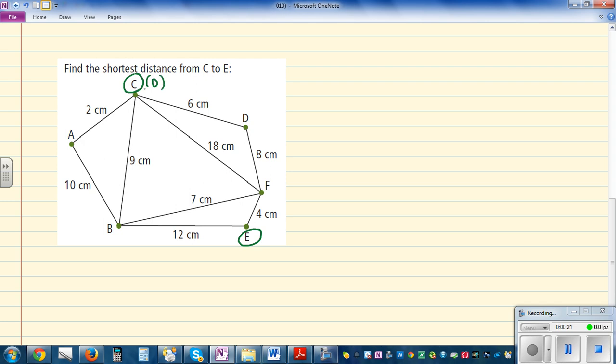If you go from C to D, that's a distance of 6, and from D to F is a distance of 8. So 8 plus 6 is 14, and 14 plus 4 is 18. If you go this way the total distance is 18.